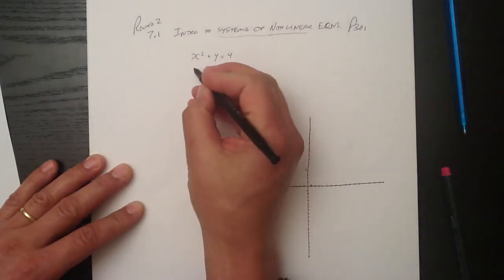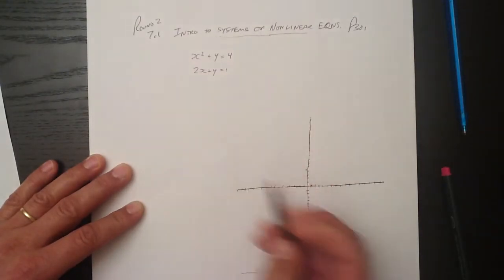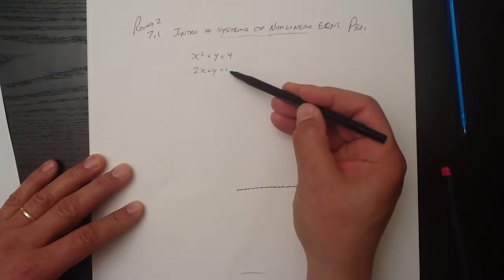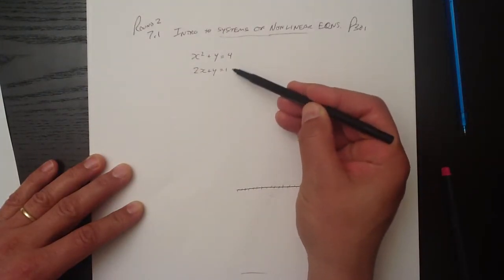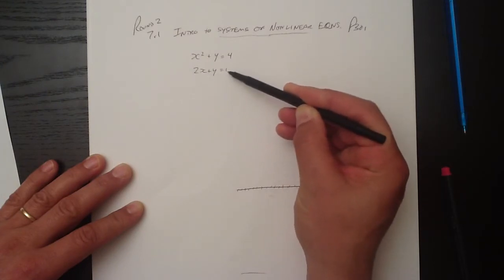So let's graph this one here. So we have a linear function here and a nonlinear function here. The linear function doesn't have an x squared in it, and this one will be graphed as a straight line.